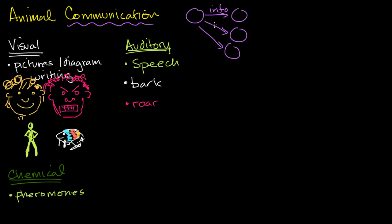Another form of communication, also not as obvious, is tactile communication. This could be a nurturing touch by a mother to communicate to a child that it is safe, or it could be a warning. You could imagine being at a dinner party and your significant other steps on your toe when you're saying things you shouldn't — that's tactile communication, giving you the information that you're talking about something you're not supposed to.